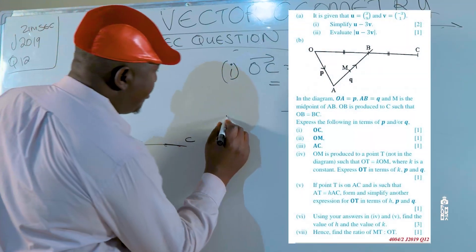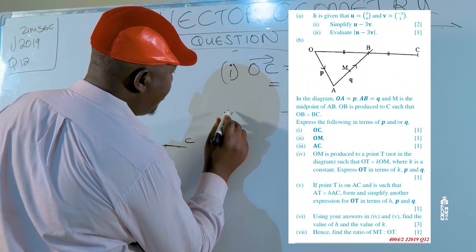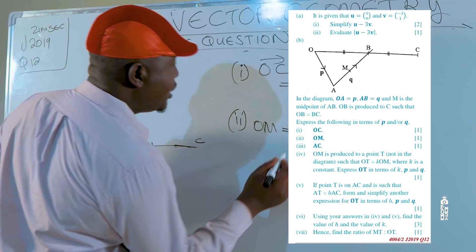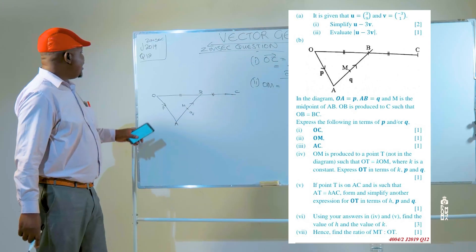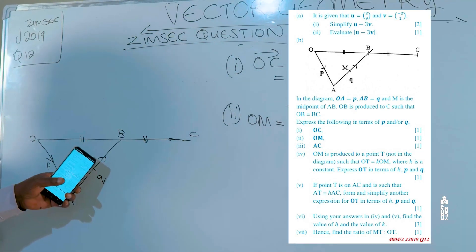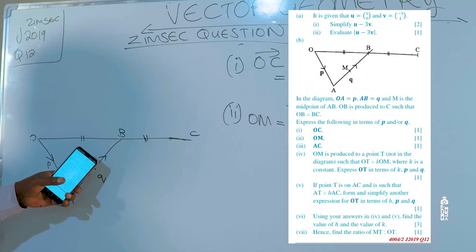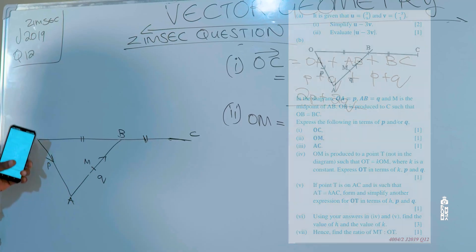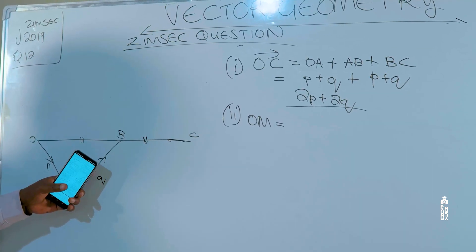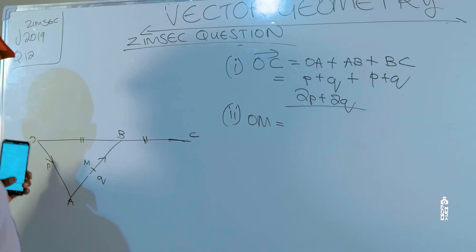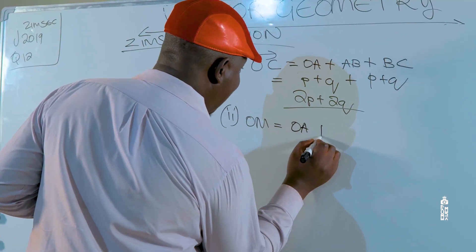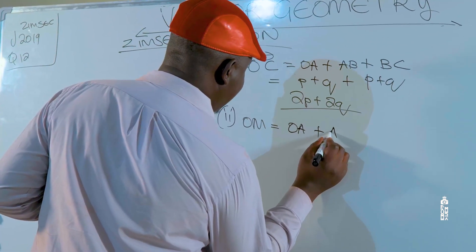Next question: item two, vector OM. Vector OM is going to be equal to vector OA plus AM.